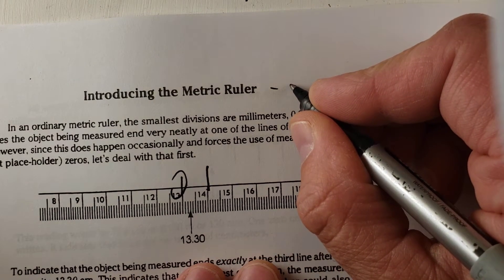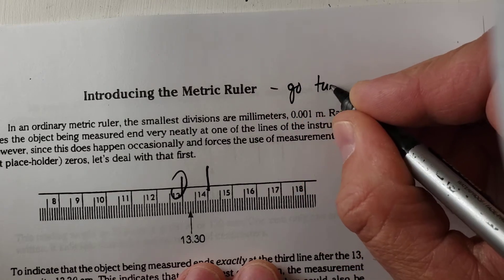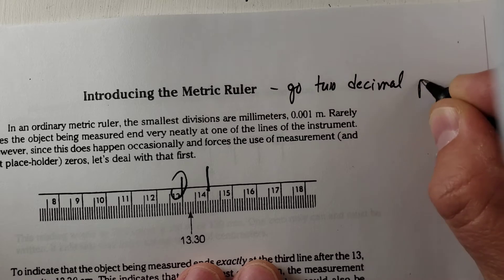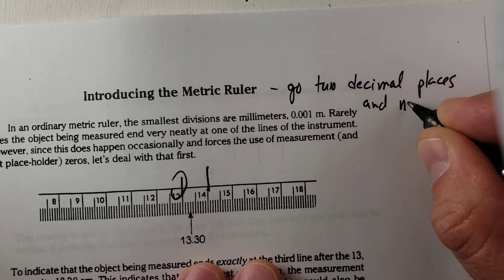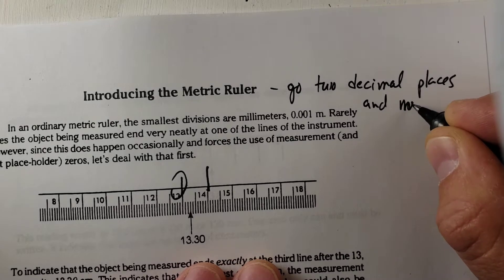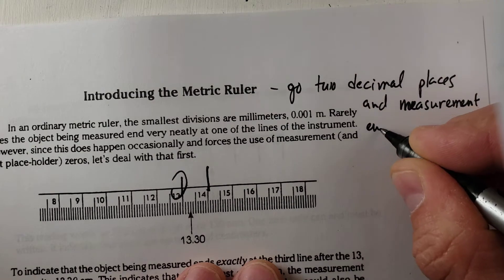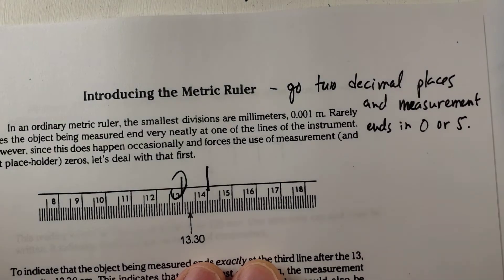So with metric ruler measurements, centimeter measurements go two decimal places. And the measurement ends in zero or five.